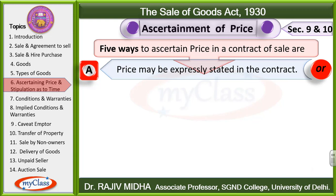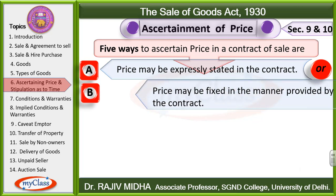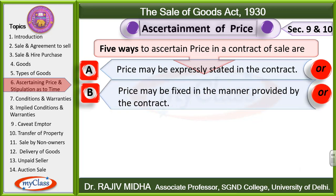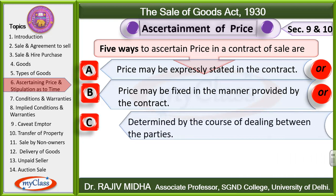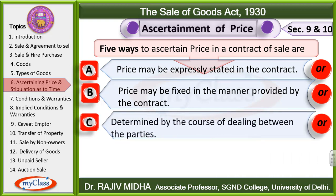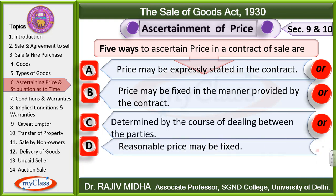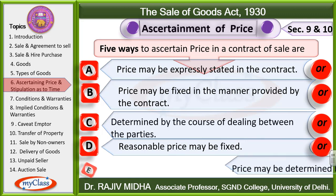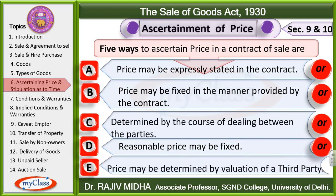The five ways to know the price are: A) Price may be expressly stated in the contract. B) Price may be fixed in the manner provided by the contract. C) Price may be determined by the course of dealing between the parties. D) A reasonable price may be fixed. E) Price may be determined by the valuation of a third party.